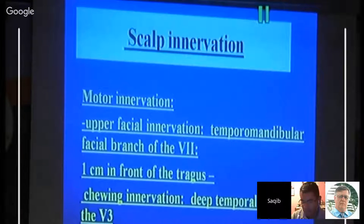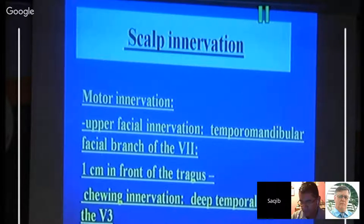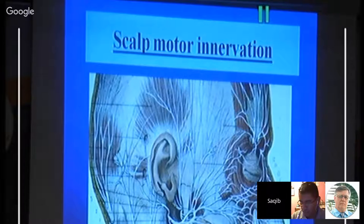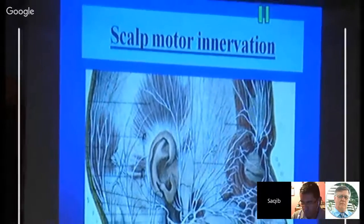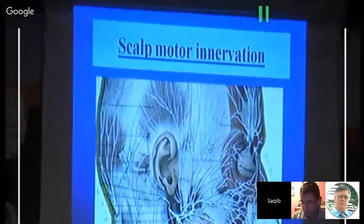Motor supply to the scalp is from the facial nerve's temporal and mandibular branches — the temporal branch is usually one centimeter in front of the tragus — and the deep temporal nerve of V5. The facial nerve has very small branches that follow a pathway, and you get some interest especially in the temporal and pterygopalatine region.